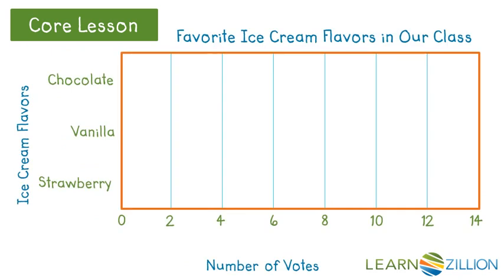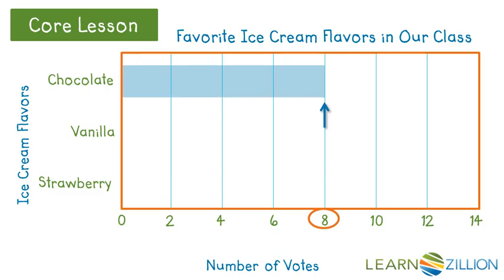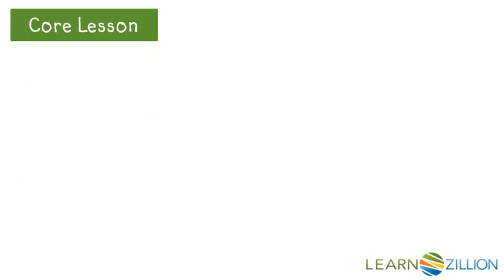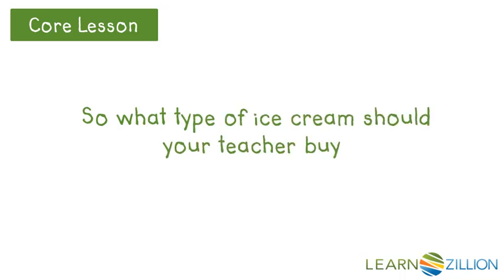We can also do bar graphs horizontally — that means side to side. We do the same thing: for chocolate, slide the scale to eight, slide to the category, draw a line and fill in the bar. Twelve students voted for vanilla, so we slide the scale to twelve, draw the line, and fill in the bar. Same for strawberry — slide to five and color in the bar.